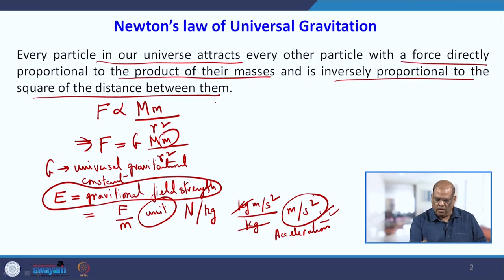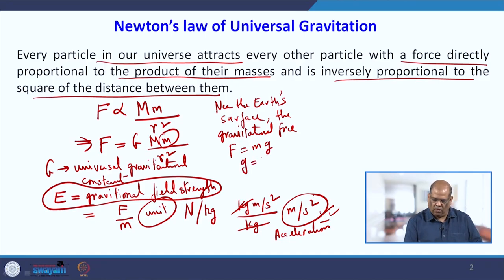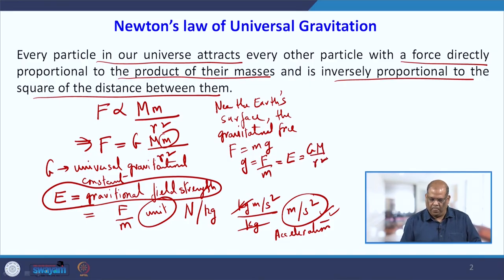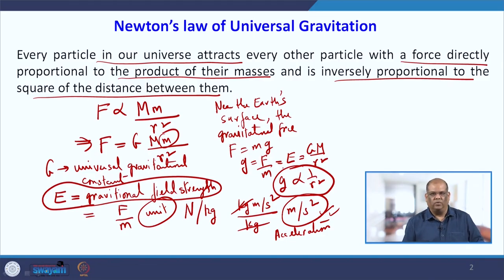Near the Earth's surface, the gravitational force is F = mg. So g = F/m, which equals E, and F/m = Gm/r². The point of proving this is that on the Earth's surface, if a body is attracted, the gravity varies as 1/r², which we call the inverse square law.